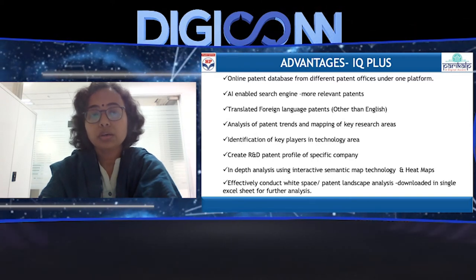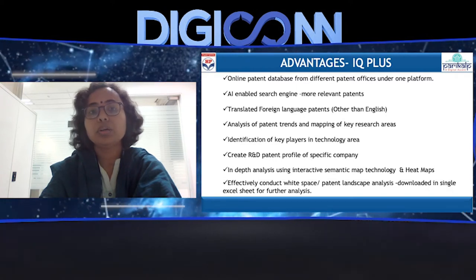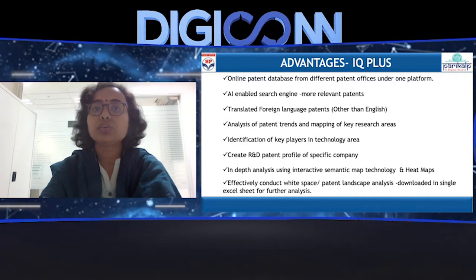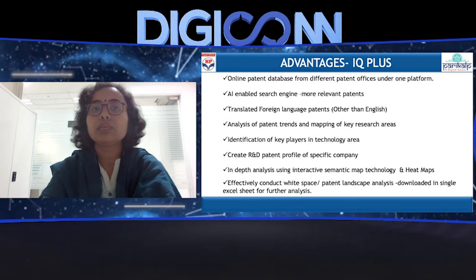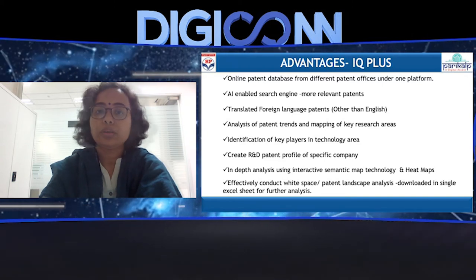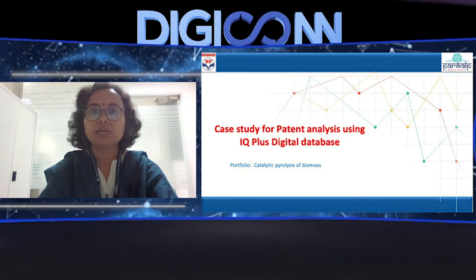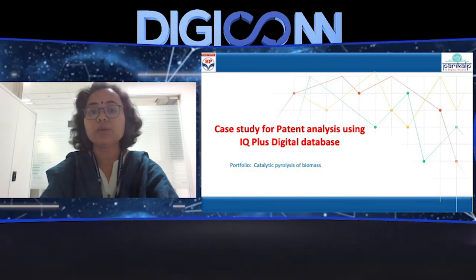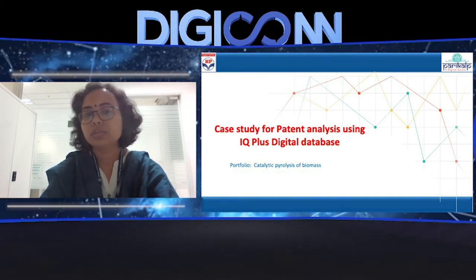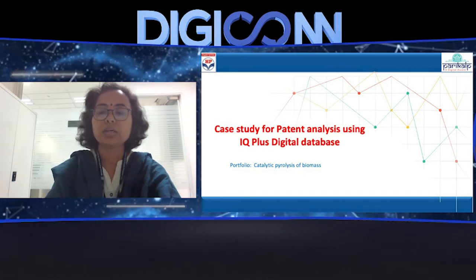On top of that, when doing a search in this search engine, I can put an alert so that if any new patent is published in a particular research area, it is immediately sent to my email ID, keeping me up to date with new developments in that particular technology domain. Having seen the white space analysis tools available and having chosen IQ Plus digital database, I would like to share a brief case study I have done on the portfolio search of catalytic pyrolysis of biomass as a broad research area search.